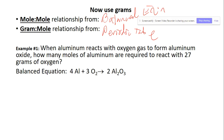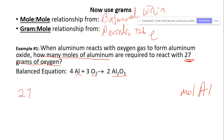Example one: aluminum reacts with oxygen to form aluminum oxide. How many moles of aluminum are required to react with 27 grams of oxygen? The given is grams of oxygen, so we're starting with grams and going to moles.